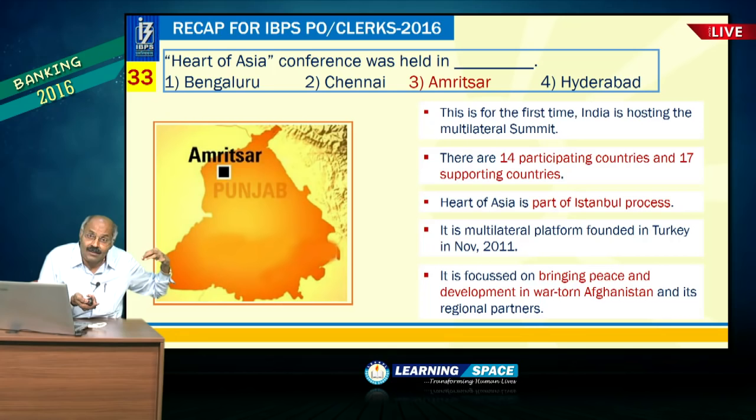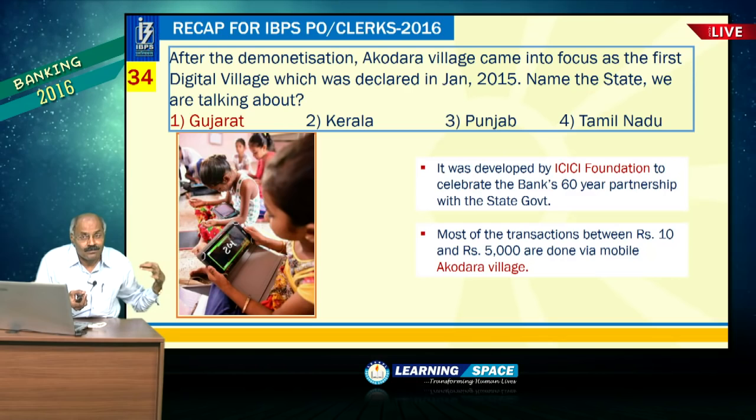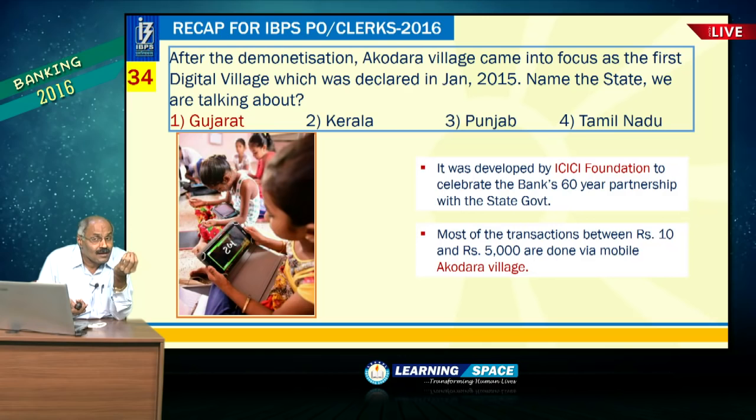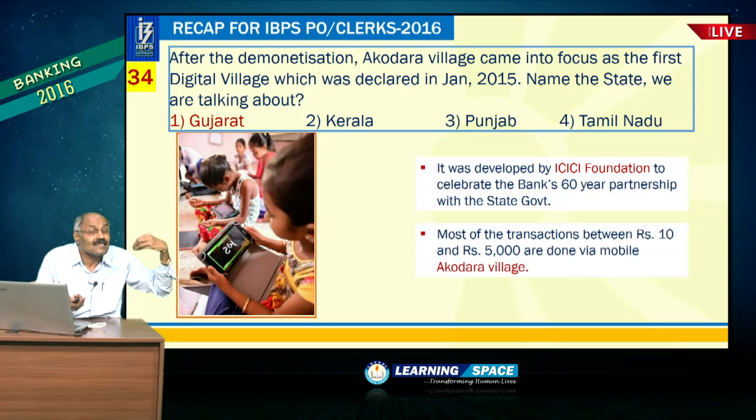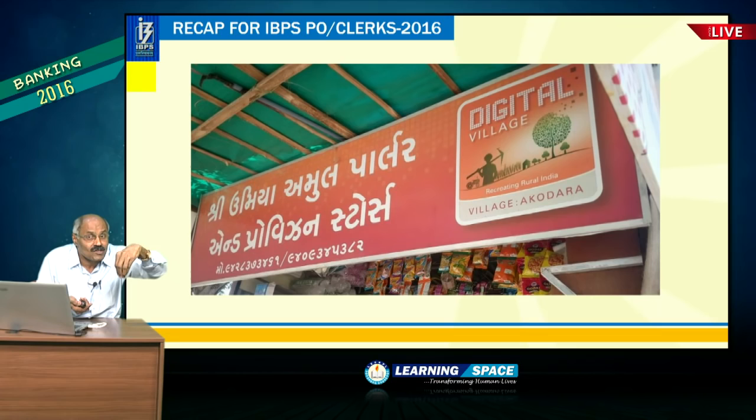Akodara is the first digital village in the country, located in Gujarat. ICICI Bank stated it will develop 100 digital villages. Akodara was also developed by the ICICI Foundation.